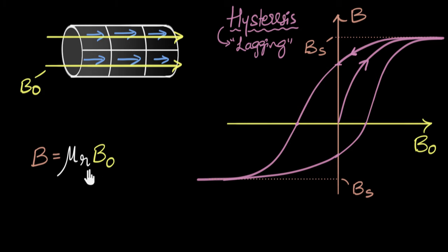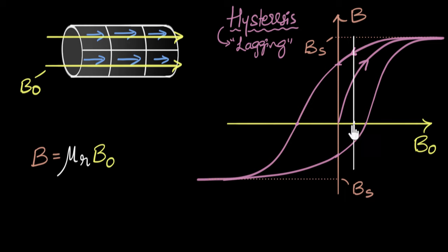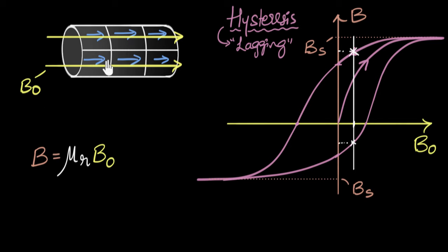You can also see immediately that the simple relationship B = μr·B0 doesn't work. Take a specific point on this graph — for a given amount of vacuum field, what is the magnetic field inside the ferromagnet? You have two answers: either a positive value or a negative value. Both are possible. This means the magnetic field inside the ferromagnet not only depends upon the vacuum field, it also depends upon the history — how it went through cycles of magnetization. Just by knowing the vacuum field, you can't tell what the magnetic field is inside. That's the whole idea behind the complication.